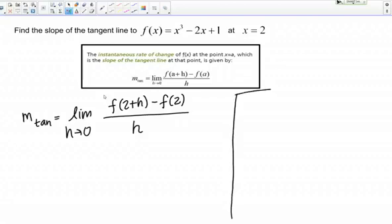Out to the side I'm going to work out what f(2 + h) is. To find f(2 + h) I simply plug in the quantity 2 + h for x in my function. That's going to look like this: (2 + h)³ - 2(2 + h) + 1.